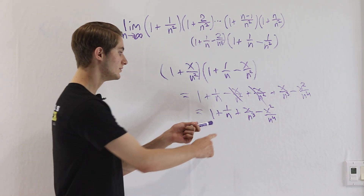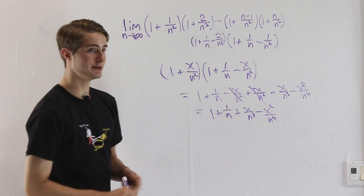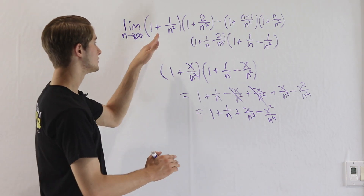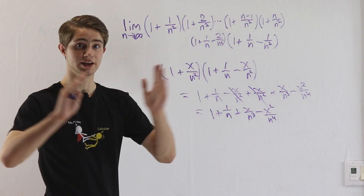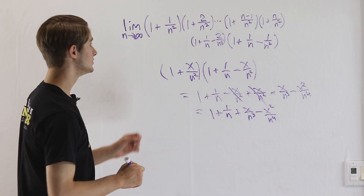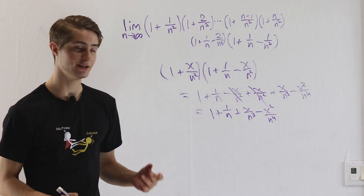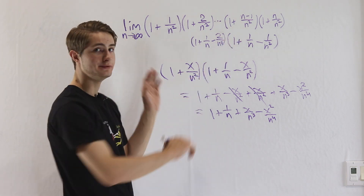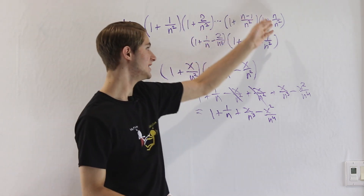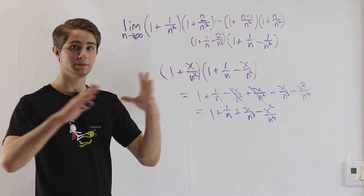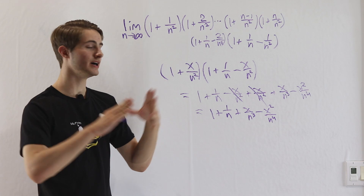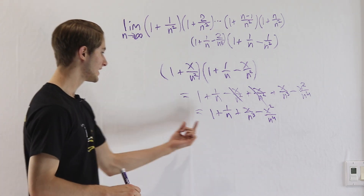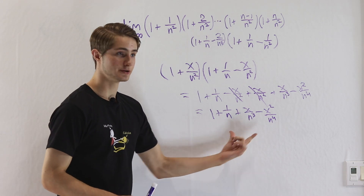Now let's see what happens if we rewrite our entire limit in terms of this. We're taking terms at the start and end and multiplying two together each time. If we're taking n terms to begin with and combining two at a time, we're going to be left with half as many terms — n over 2 of these terms.